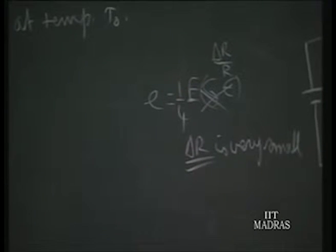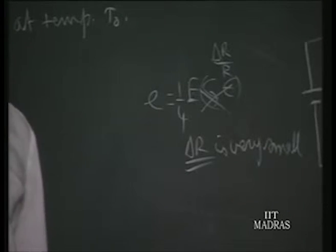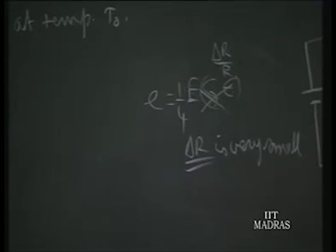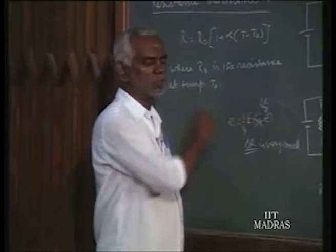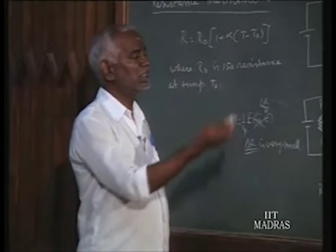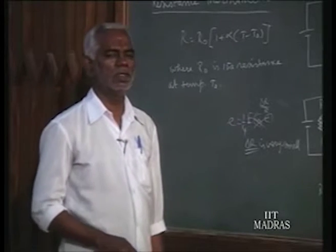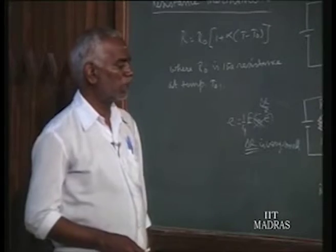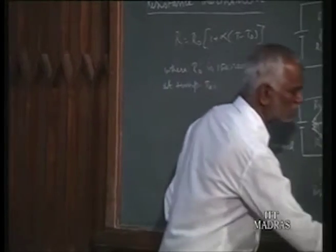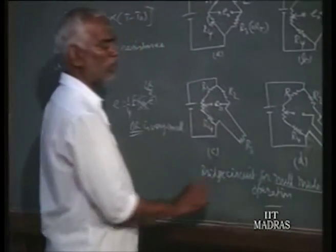The bridge for strain gauges is operated in deflection mode of operation since imbalance voltage is proportional to delta-R. But here, since the output voltage is not proportional to delta-R, we cannot operate it in deflection mode — we operate it only in null mode of operation. What is null mode of operation is depicted in diagram A.